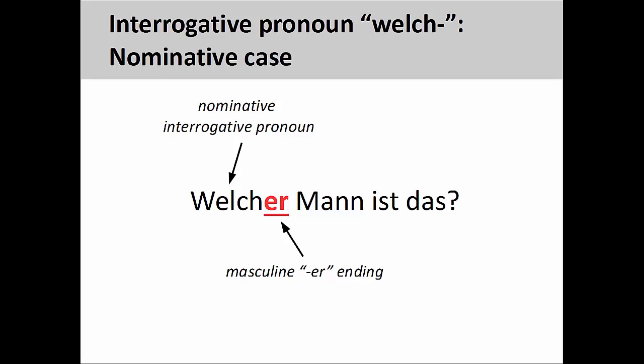Although the interrogative pronoun 'wer' is limited to masculine endings, 'welch' takes the full range of endings based on the gender, case, and number of the noun it modifies. Here, the masculine -er ending indicates that the noun it modifies is in the nominative case and the subject of the sentence: 'Welcher Mann ist das?' — Which man is that?